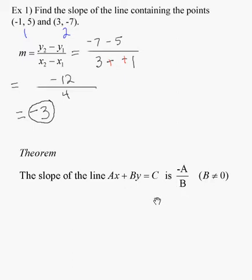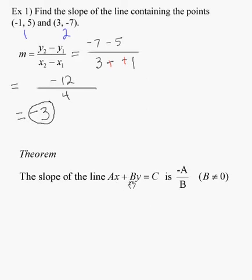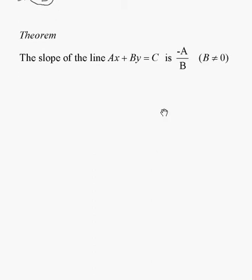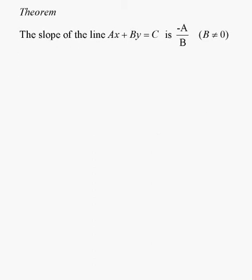Once again, the denominator can't be zero. Now, that only works when x and y are on the same side of the equal sign. Opposite of the coefficient of x over the coefficient of y. So, that's our little quick theorem to be able to look at an equation and find its slope.